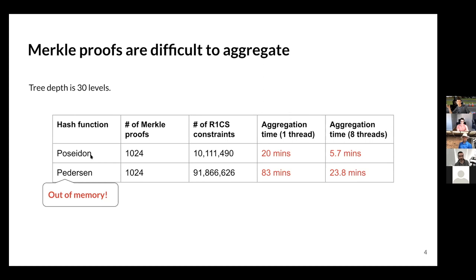For Merkle trees, aggregation is quite expensive. Even using Merkle-friendly hash functions like Poseidon with state-of-the-art SNARKs like Groth16, when aggregating a thousand proofs you have tens of millions of constraints, taking 20 minutes with one thread and 5.7 minutes with eight threads. If you use something more provable like Pedersen instead of Poseidon, you have even more constraints — and you can actually run out of memory with that many constraints, making aggregation impossible.